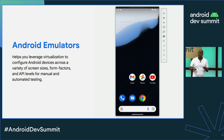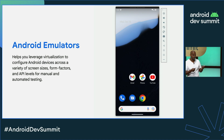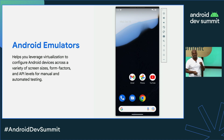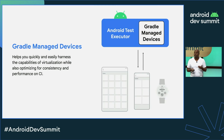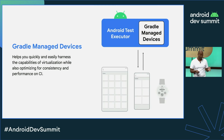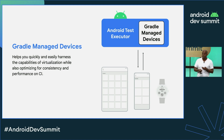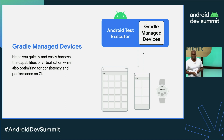Android emulators do provide a lot of flexibility in allowing you to create different types of device shapes and sizes across different API levels, but properly leveraging them to run scalably and reliably on your CI is still a challenge. That's why we've worked on Gradle managed devices. What if you could just describe to Gradle the devices you want to run your tests on, and then it tries to do so in a reliable, optimized way for you?